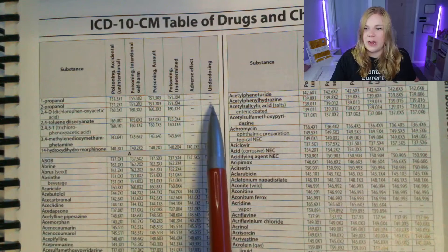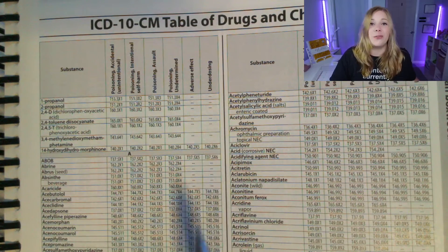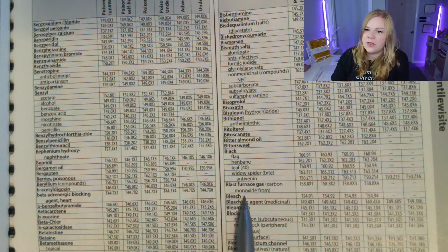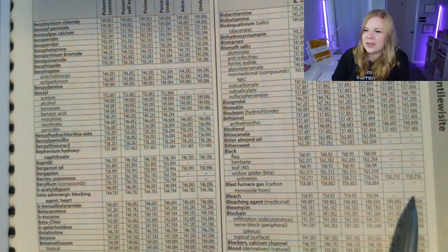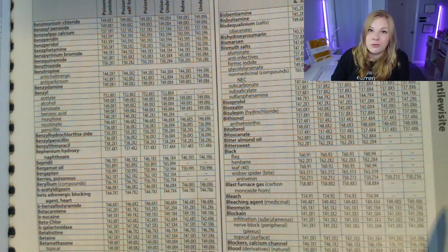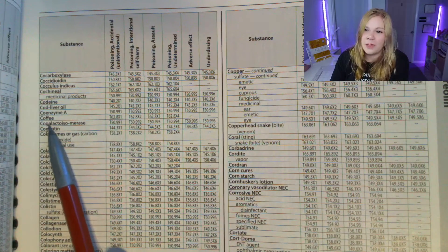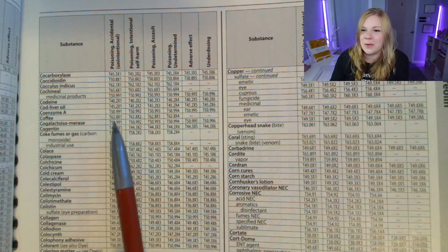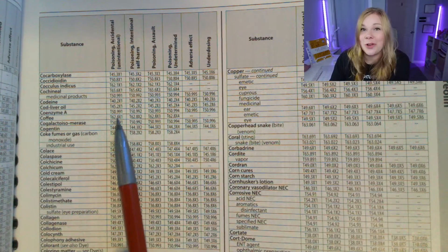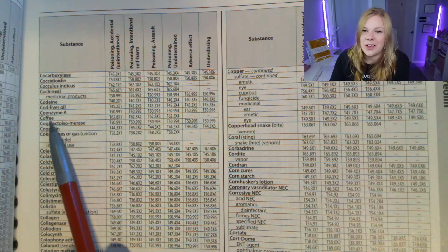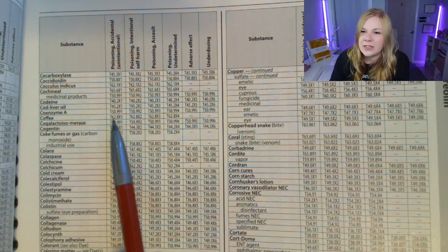Then we have underdosing — the patient took the right medication but did not take the full dosage they were supposed to. Remember, this is drugs and chemicals, so even things like bleach are within the table. There would be a dash for underdosing of bleach because you wouldn't be prescribing it. Same thing with coffee — you will find coffee in the Table of Drugs and Chemicals, and there are actually codes for intentional poisoning of yourself with coffee.